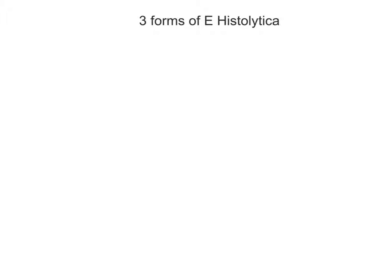There are three forms of E. histolytica: the trophozoite form, the pre-cystic form, and the cystic form.